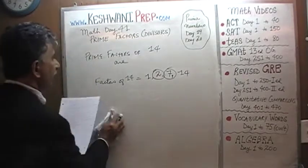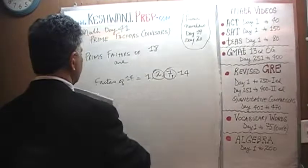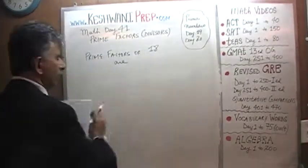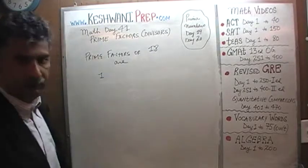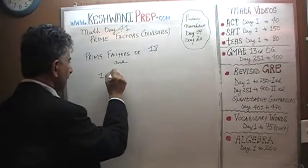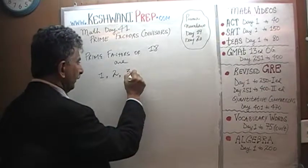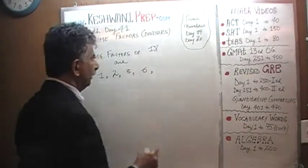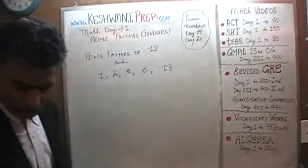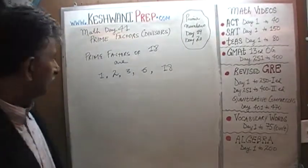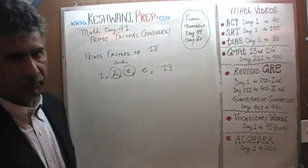How about 18? Prime factors of 18. We are going to list all the factors of 18 first. 18 can be divided evenly by 1, by 2, by 3, by 6, and by 18 itself. We then go back to our list and identify the prime factors. 2 and 3 are the prime factors of 18.